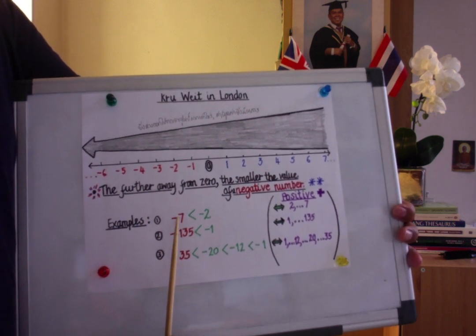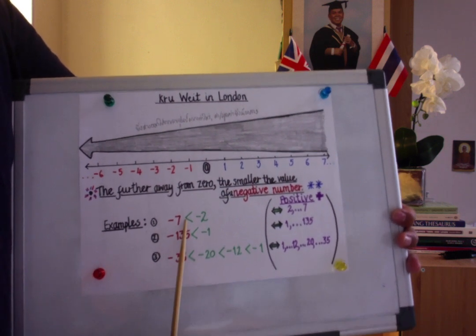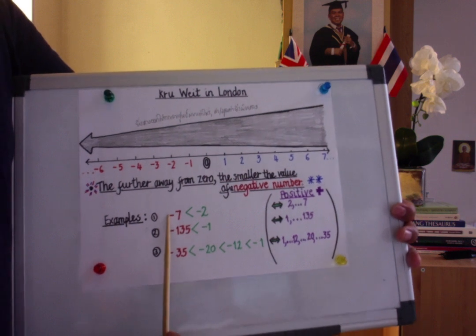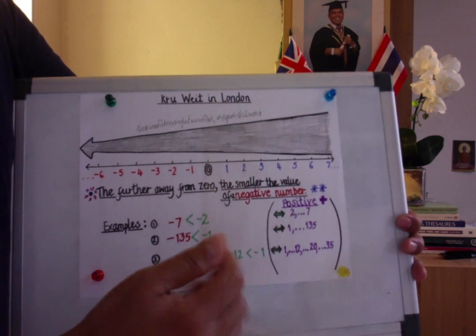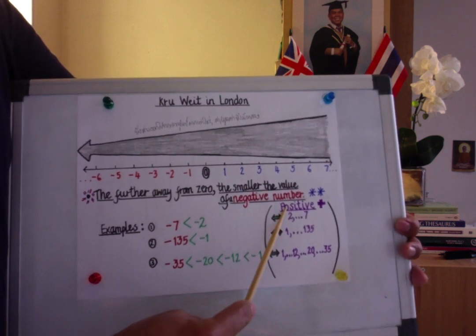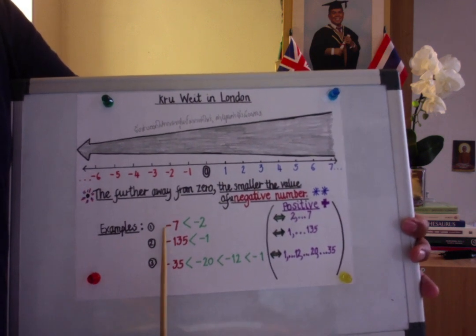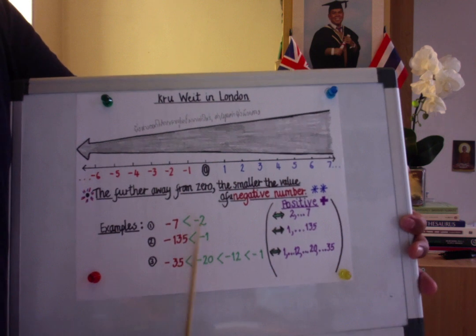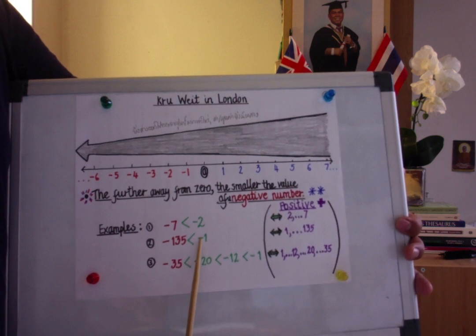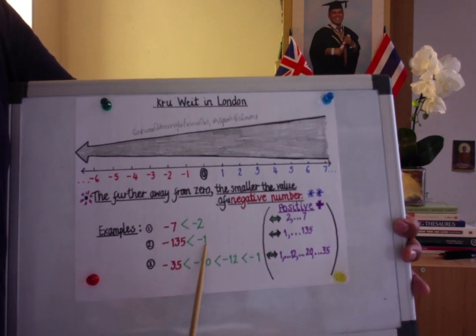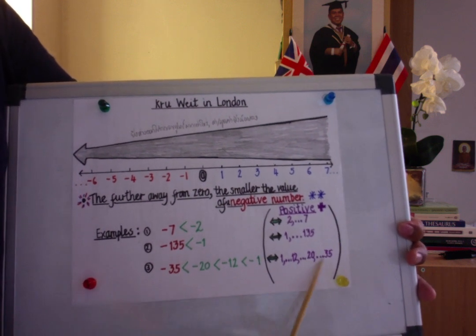You can see here that negative 7 is less than negative 2. Zero is in the middle — if you walk to the left, the further you go, the smaller the value. If we talk about positive numbers it is the opposite: 7 is greater than 2. But for negative numbers, negative 7 is less than negative 2, and negative 135 is less than negative 1.